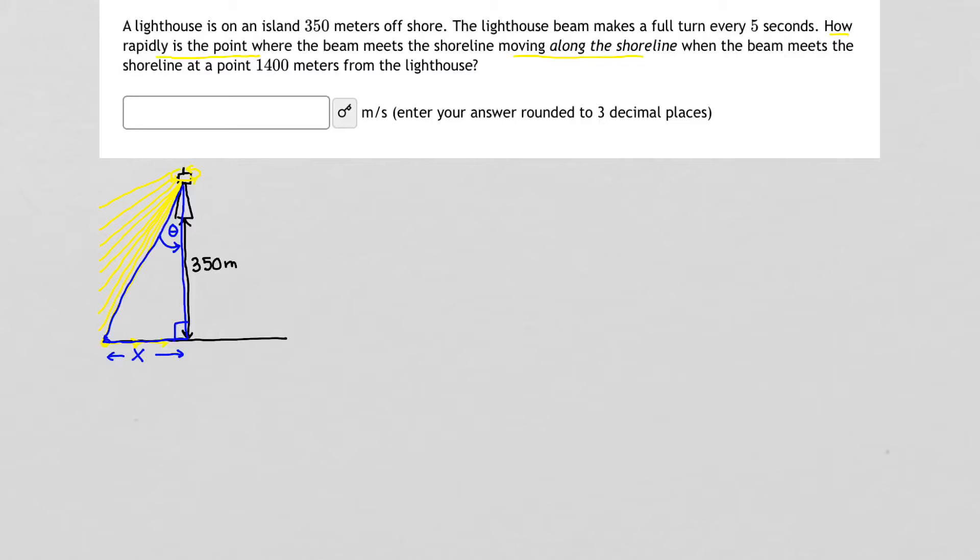We're going to use some trigonometry when we go about solving it, but before we do that let's write down what we know and what we're trying to solve. So we are looking for specifically how rapidly is this point traveling. And a way to represent that in our problem is how rapidly is this distance x changing. So we are going to be looking for dx/dt. That's our unknown. And we are specifically looking for this when the beam meets the shoreline at a point 1400 meters from the lighthouse.